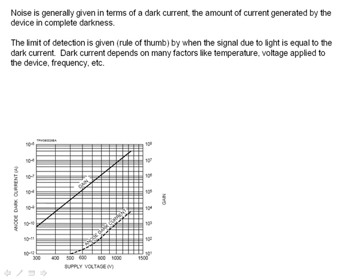Detection is always determined by the noise. Now, noise is generally given in terms of what's called dark current, which is the amount of current that's going to come out of your photomultiplier tube in complete darkness, because you always have this noise.